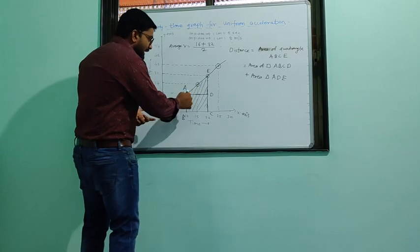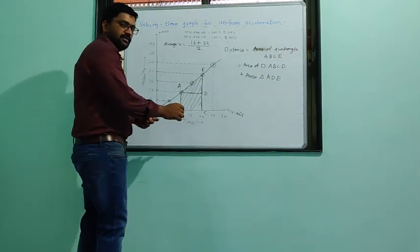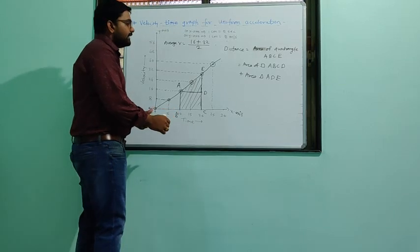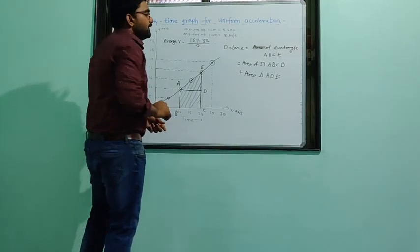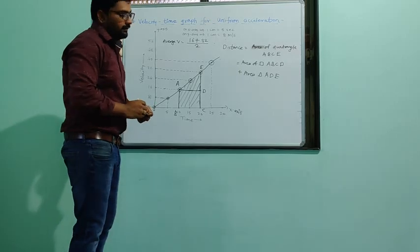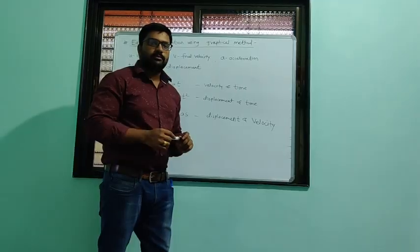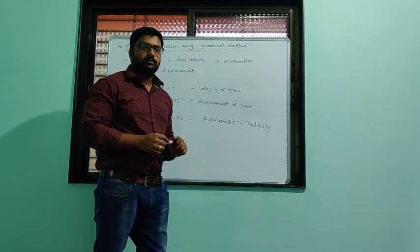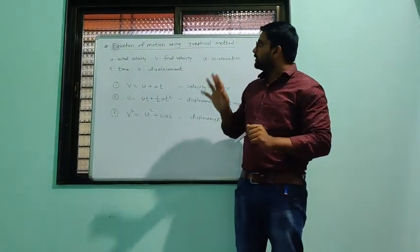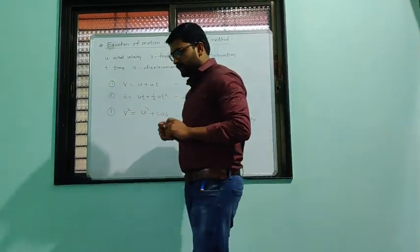Simply, distance = area under the motion graph. Using these two methods we can calculate the distance. Next topic: expression of motion using the graphical method.